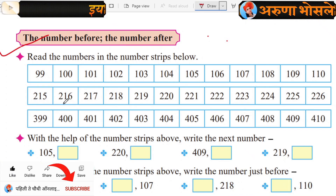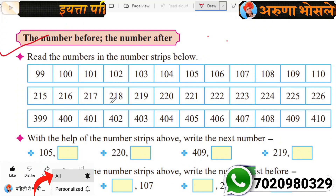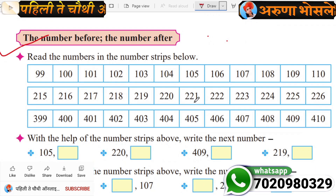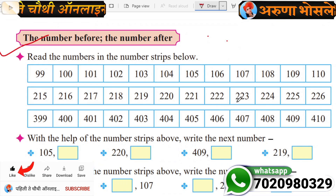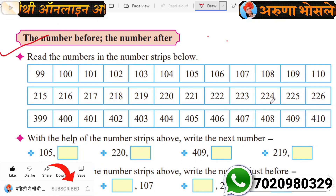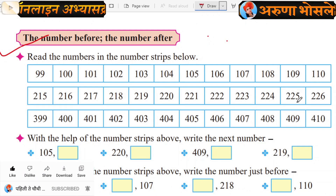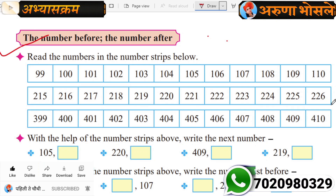215, 216, 217, 218, 219, 220, 221, 222, 223, 224, 225, 226. Third strip.